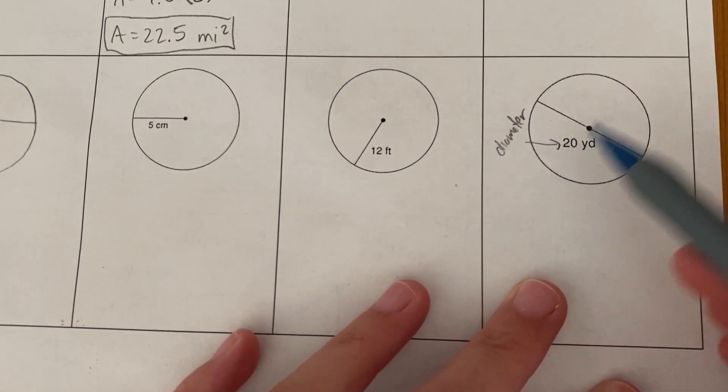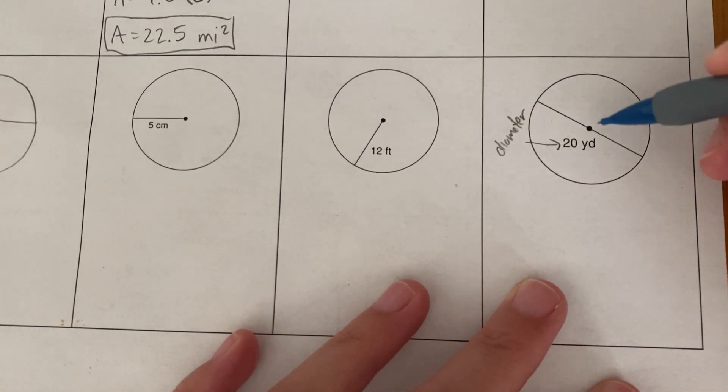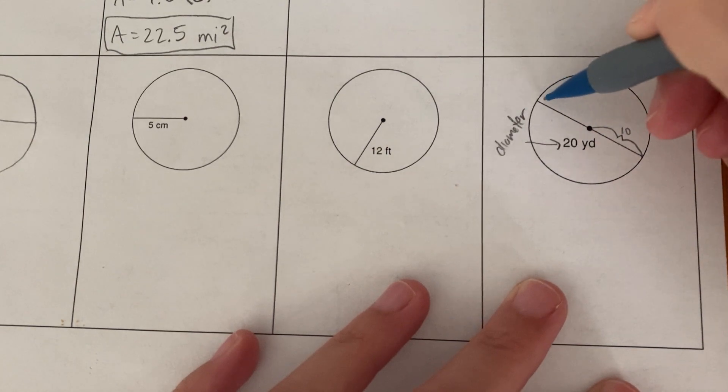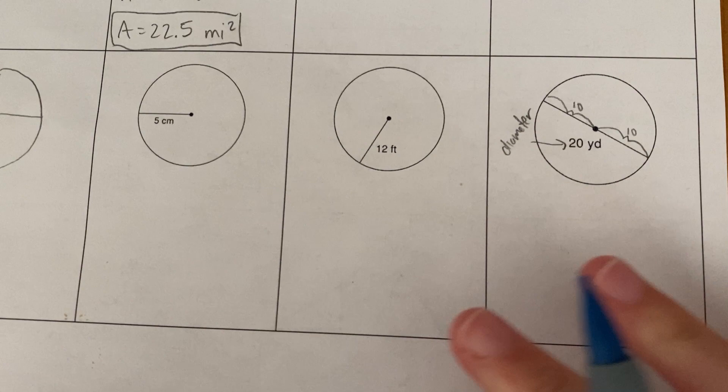If I'm given the diameter is 20 yards, that's this distance all the way across. That means this radius is 10 yards, and this radius is 10 yards. So just be careful, right? Here, the radius would be 10, and you'd plug in 10.